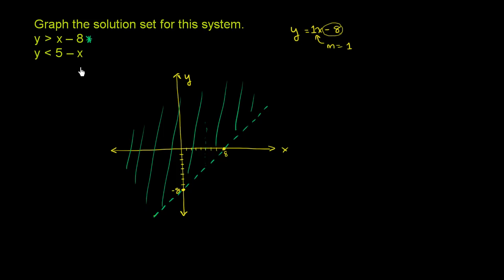In general, greater than means above the line, and less than means below the line. But you can test points to verify. Testing (0, 0): 0 is greater than 0 minus 8, or 0 is greater than negative 8 — that works. Testing (10, 0): 10 minus 8 is 2, and 0 is not greater than 2, so that doesn't work. This confirms the region above the boundary line is correct.